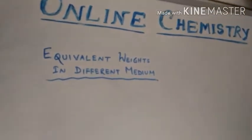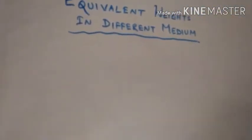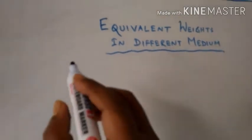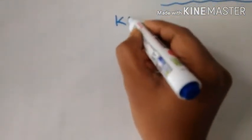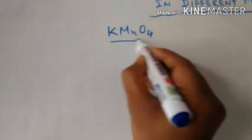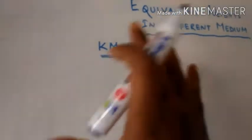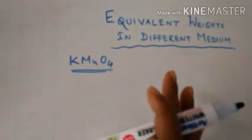I am taking an example of KMnO4, potassium permanganate. We are going to calculate the equivalent weight of potassium permanganate in different mediums. First, we are taking acidic medium.